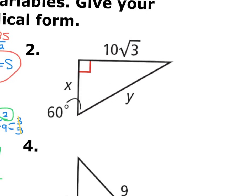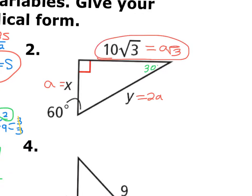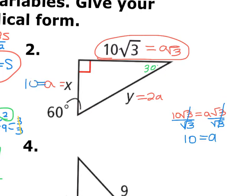Question 2: 60° is in the bottom-left corner, so 30° is at the top. Opposite the 30° is A, opposite the 60° is A√3, and opposite the 90° is 2A. Given the A√3 side: 10√3 = A√3, divide both sides by √3 — the roots cancel — so A = 10. The remaining sides are 10 and 2 · 10 = 20.